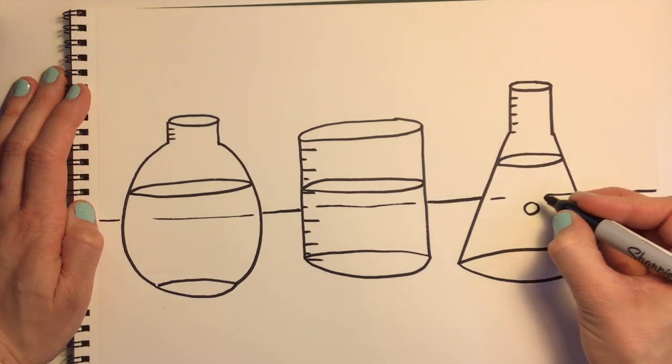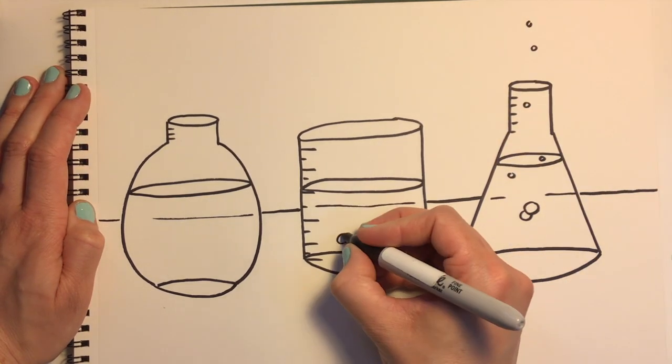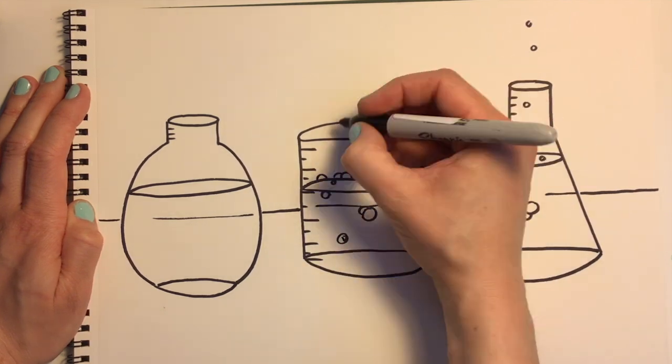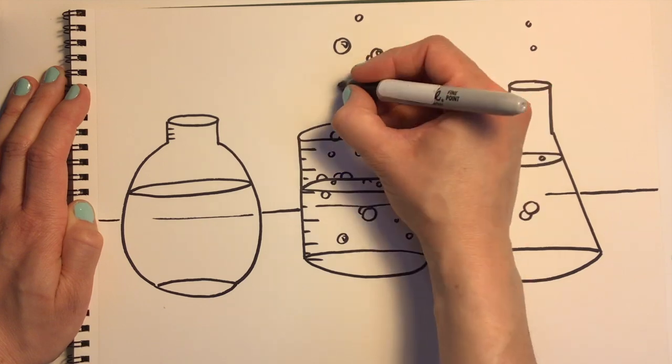Now let's draw some circles to represent bubbles in our science beakers. You decide how many bubbles you want to put in. The more bubbles, the bigger the chemical reaction.